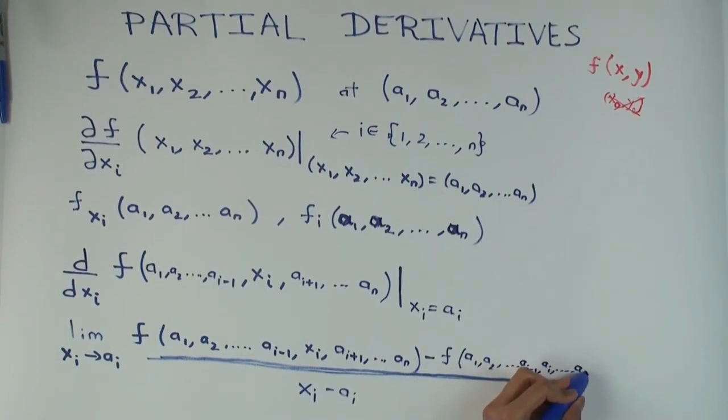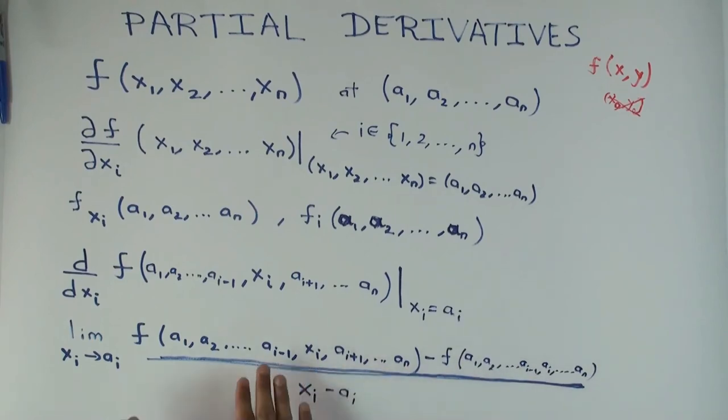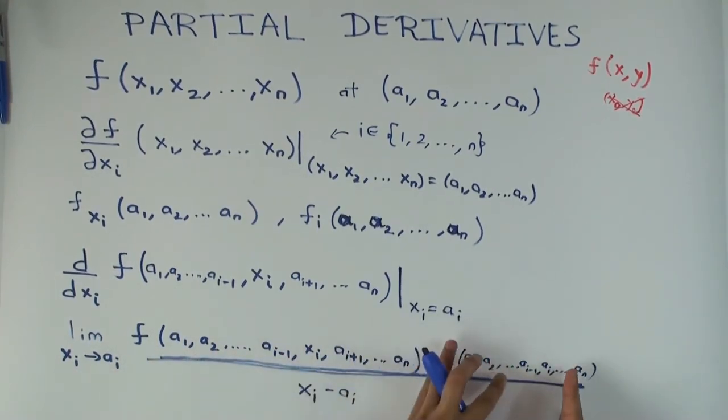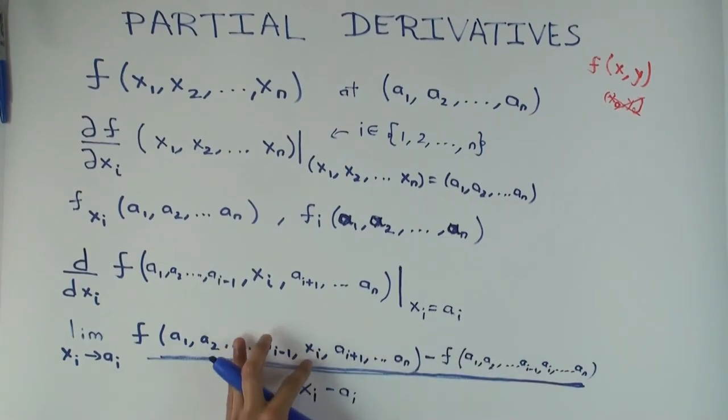Because this is the, so this is just f at a point which is close to the point minus f at the actual point. And the only coordinate I change here is the xi coordinate and just make it xi. So that's what that looks.